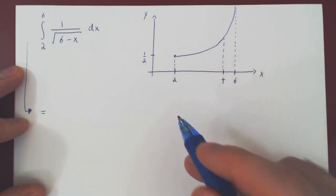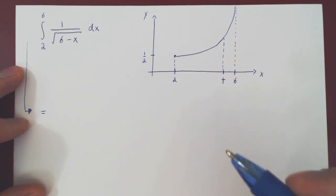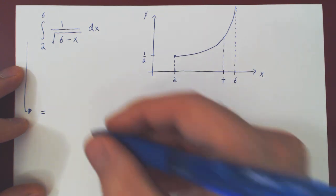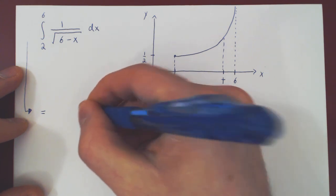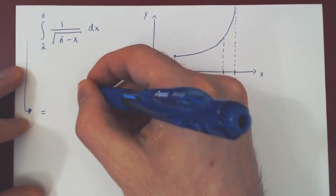So on that interval we can use the fundamental theorem of calculus to evaluate our integral. So that's the first step. We integrate from 2 to t,